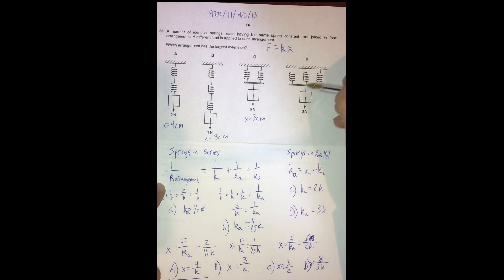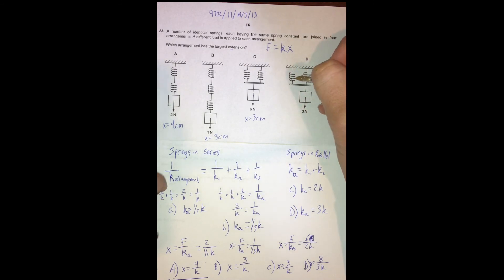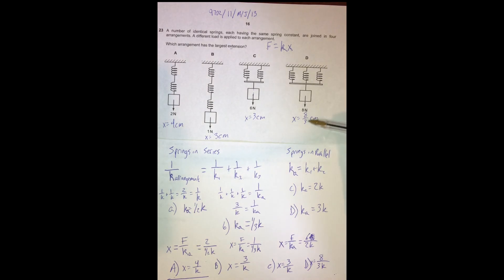For choice D (three springs in parallel, eight-newton force): one spring alone would extend 8 cm, but dividing that amongst three springs gives 8/3 cm. Even with this more intuitive approach, choice A gives the largest extension at 4 cm. It's good to think about problems both ways — the formal equations and the intuitive reasoning both lead to the same correct answer.